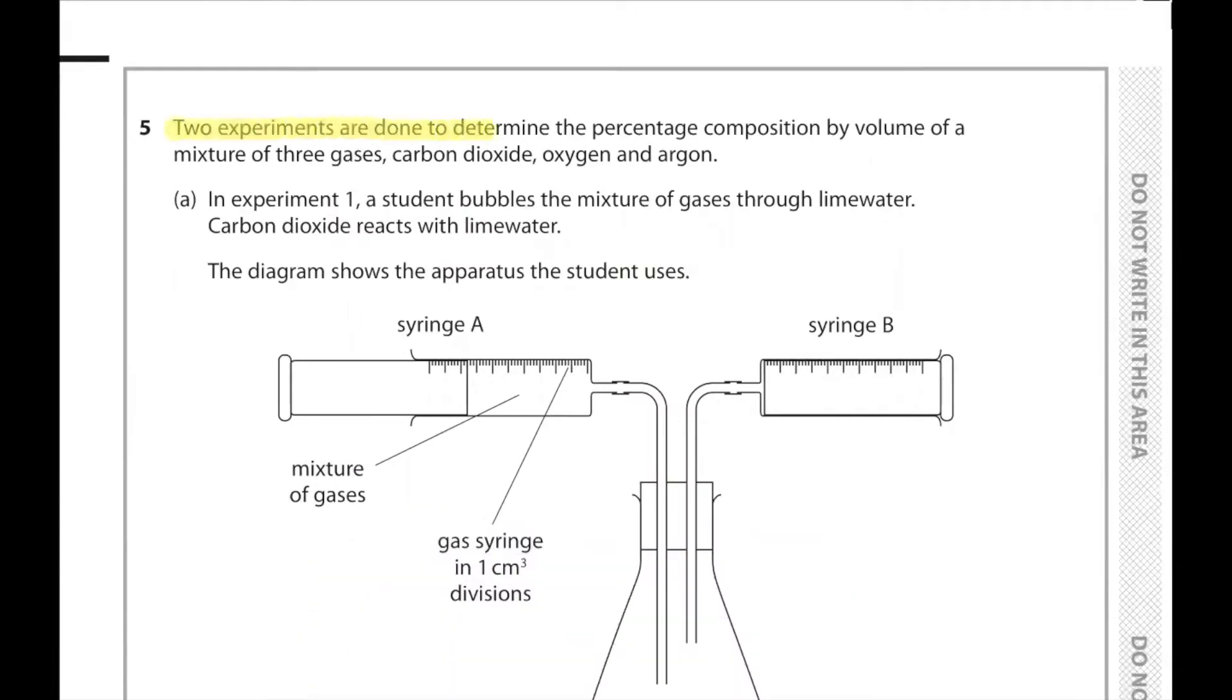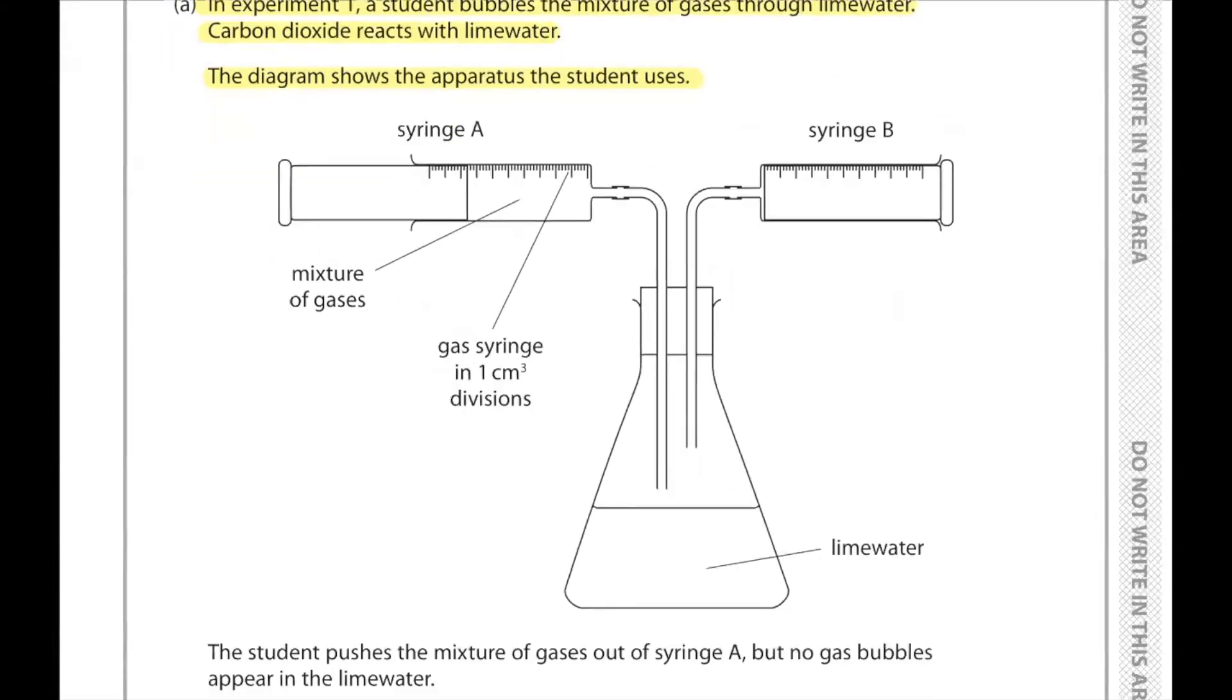Question number 5: Two experiments are done to determine the percentage composition by volume of a mixture of three gases - carbon dioxide, oxygen, and argon. In experiment 1, a student bubbles the mixture of gases through lime water. Carbon dioxide reacts with lime water. The diagram shows the apparatus with syringe A containing the mixture of gases, gas syringe in 1 cm³ divisions, and syringe B with lime water.